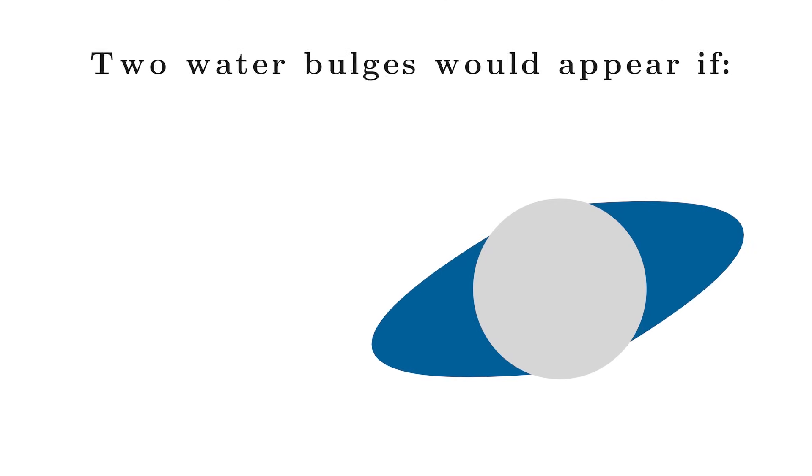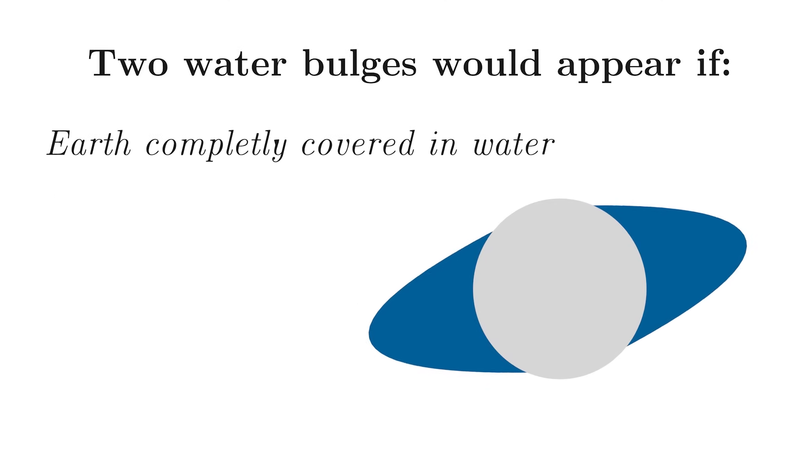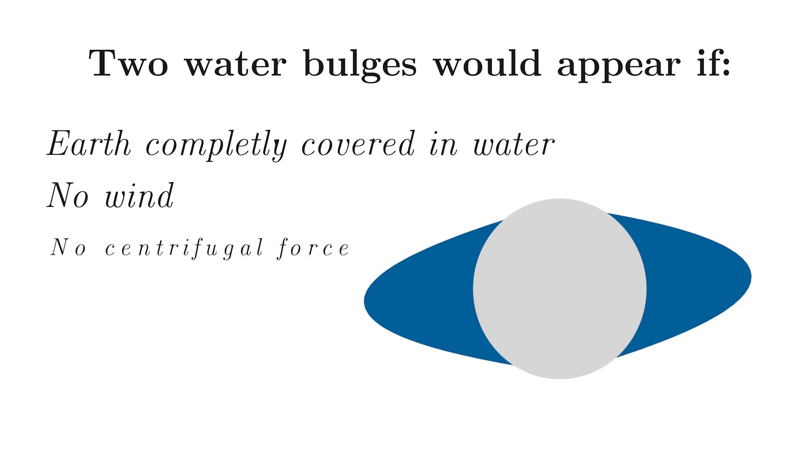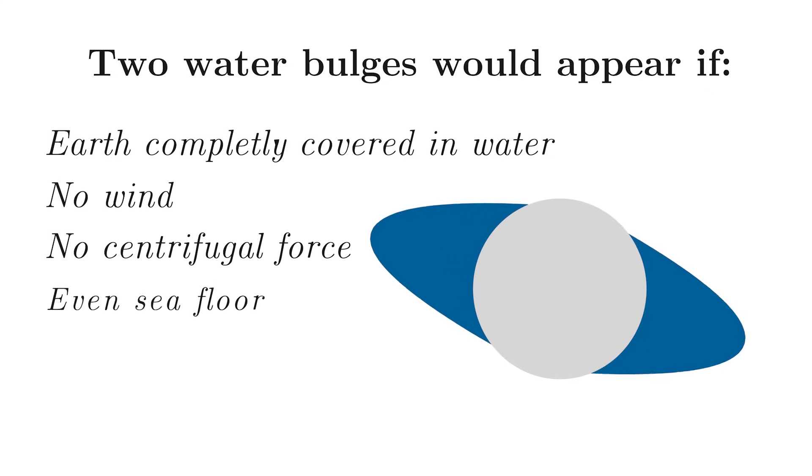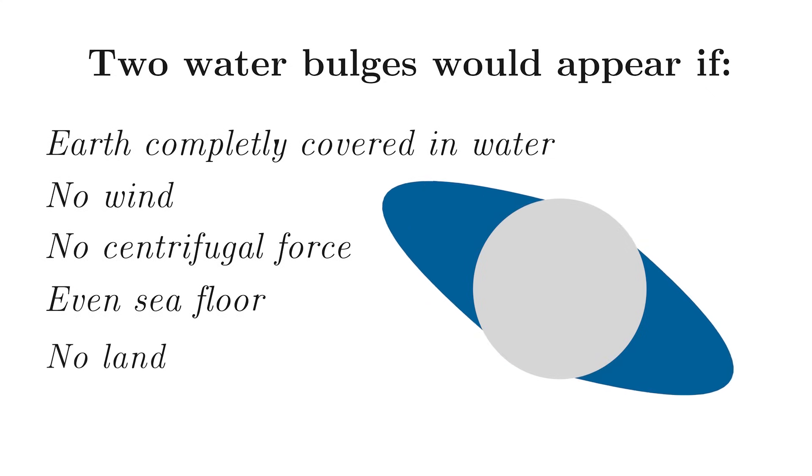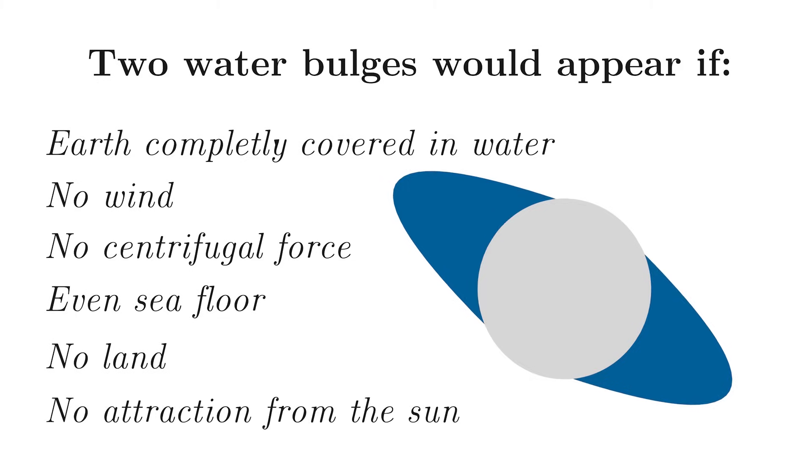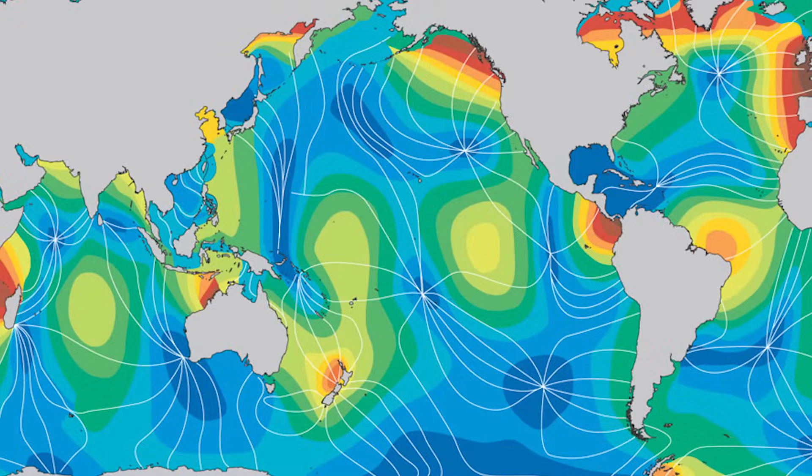So remember, what we saw was not water but a distribution of vector forces. The Earth would only have these two water bulges if Earth was completely covered in water and we'd always see the water distributed like this - if there's no wind, the Earth has no centrifugal force, has a perfectly smooth and even depth seafloor, and has no land. And there's no gravitational attraction from the sun - but there is. It's actually around 50% as strong as the moon. So it's really an ideal picture. The actual distribution of water due to tides looks like this.